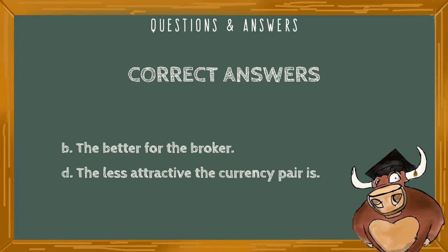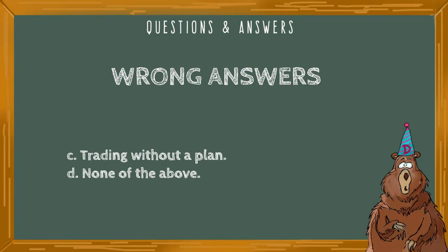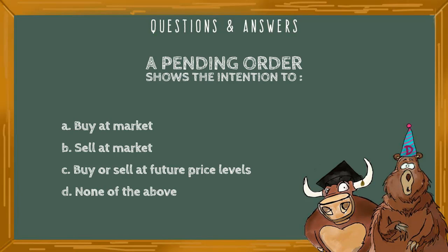Scalping refers to: A) trading with a very short-term perspective, B) trading for very small profit targets, C) trading without a plan, D) none of the above. The correct answers include A, trading with a very short-term perspective, and B, trading for a very small profit target. Scalpers are typically in and out of the market quite rapidly, taking small pieces of the market with them.